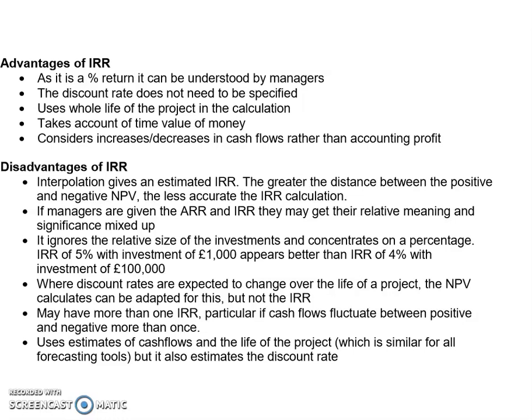If your cost of capital is expected to change over the life of the project, then the IRR cannot be adapted for this, whereas with an NPV you can adapt your technique to take into account changes in the cost of capital. There could also be more than one IRR, and that is particularly so if you have irregular cash flows — a negative cash flow at the beginning, then some positive, then some negative over the life of the project — meaning you're quite likely to get two IRRs, which can be very complicated.